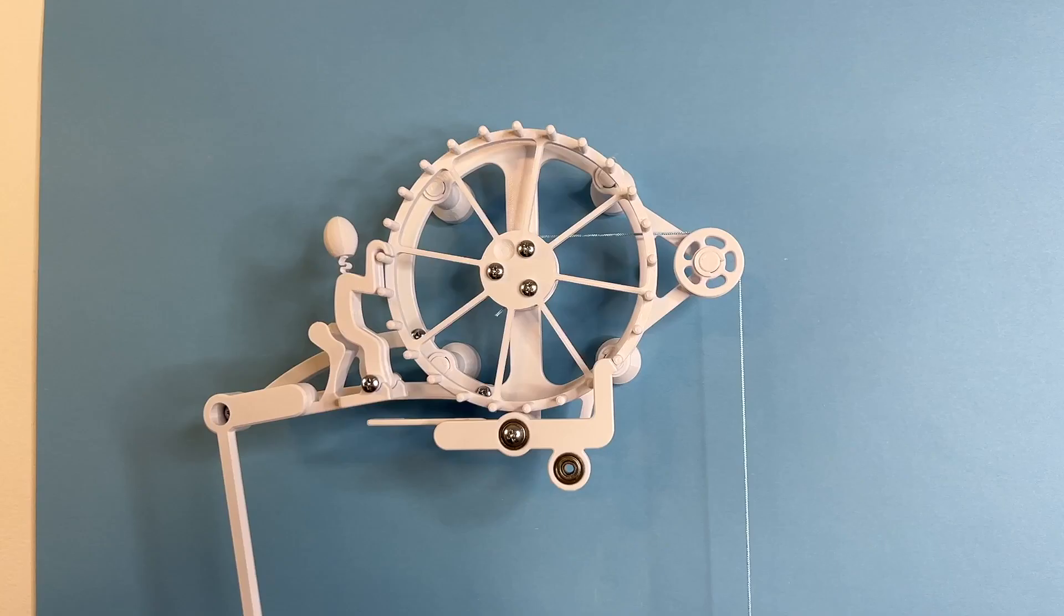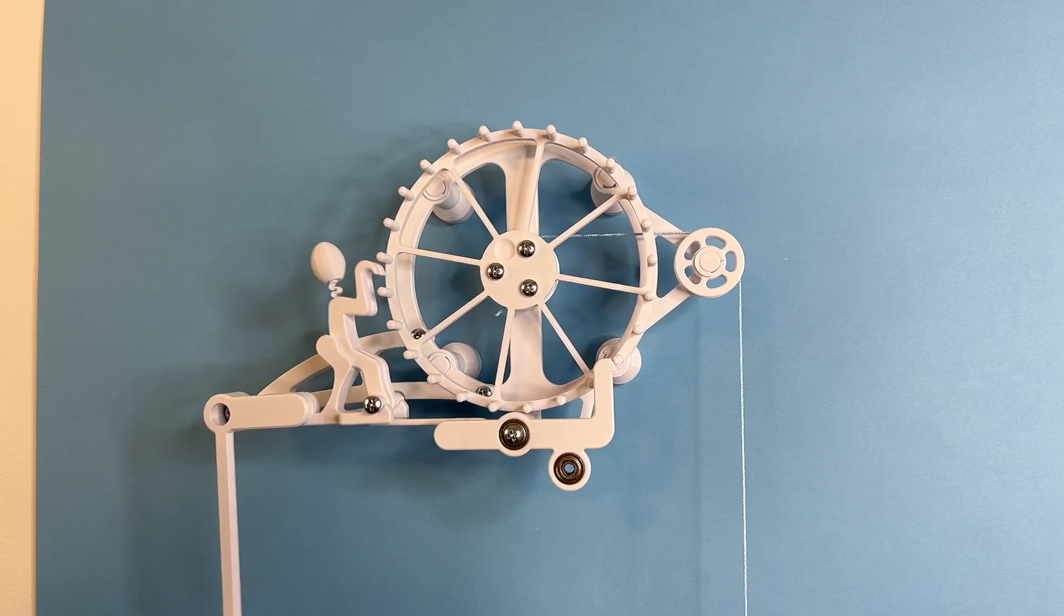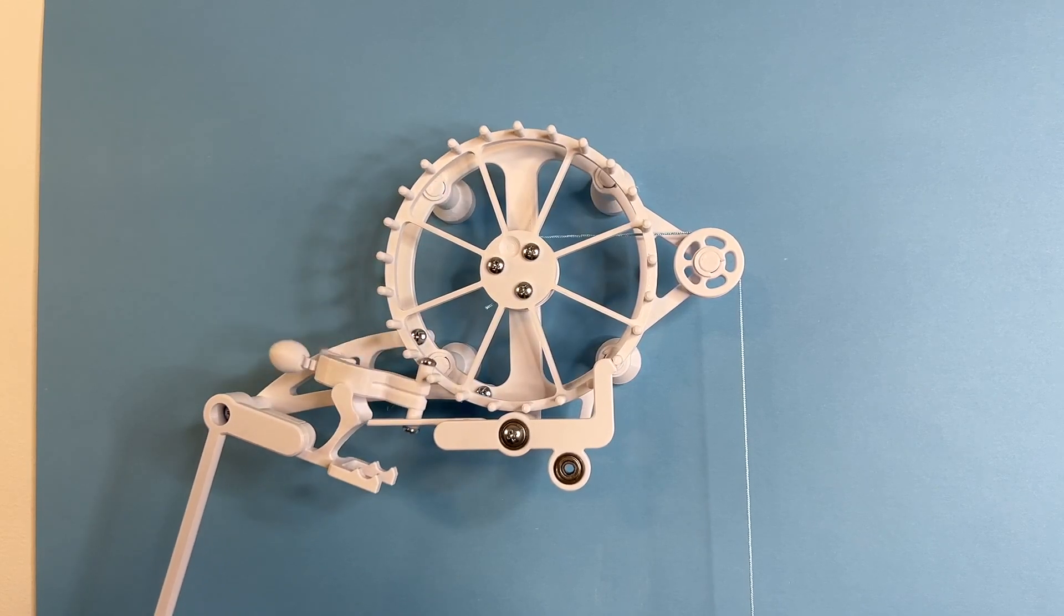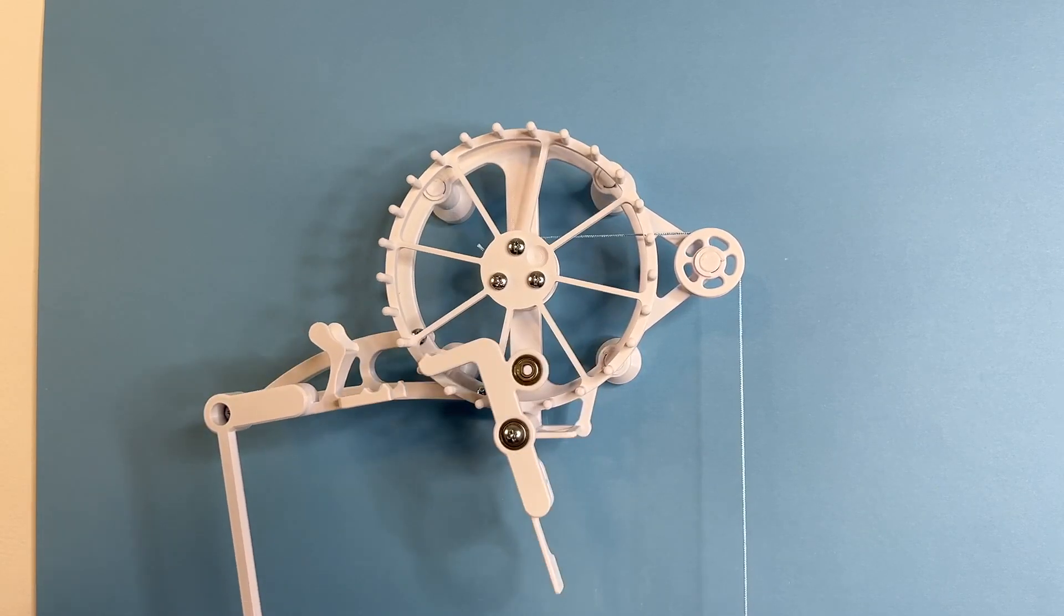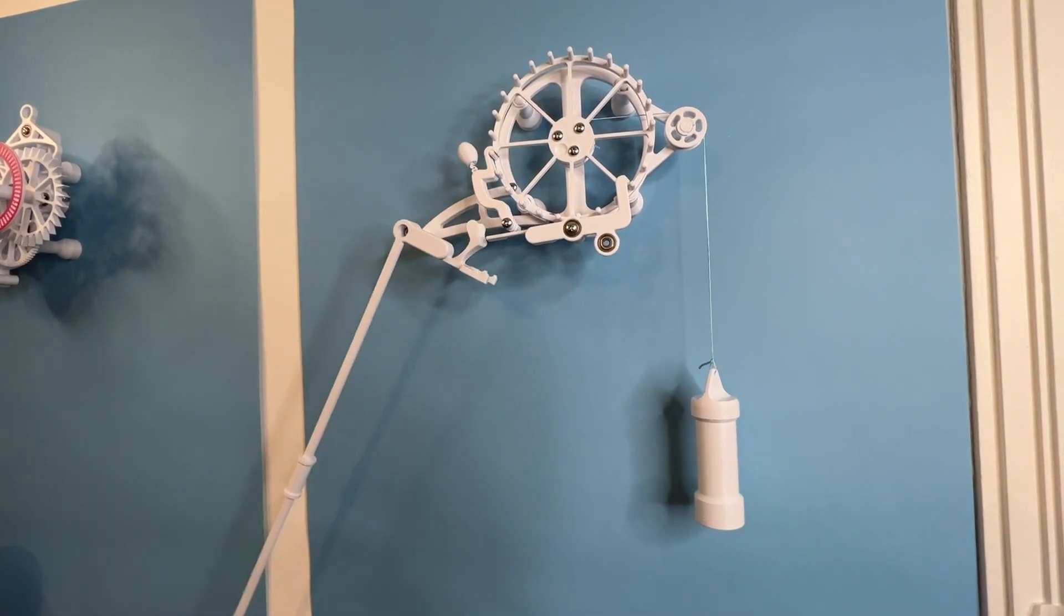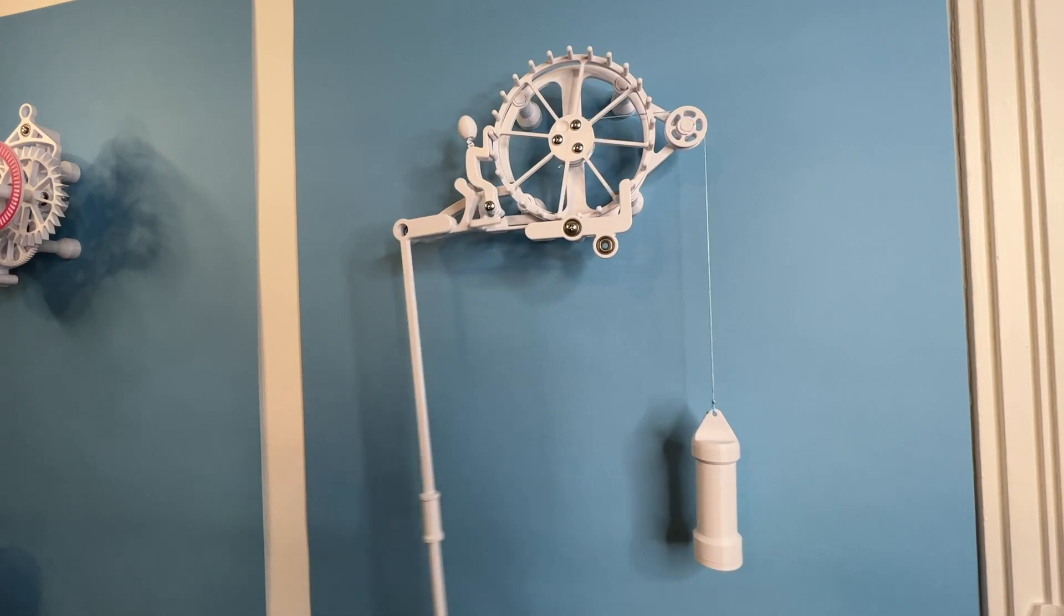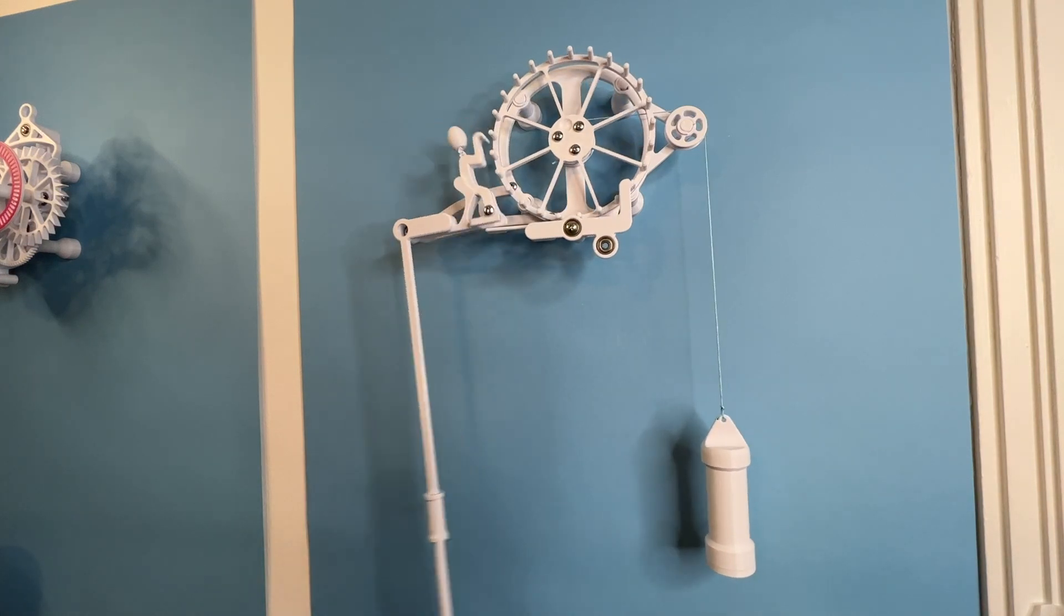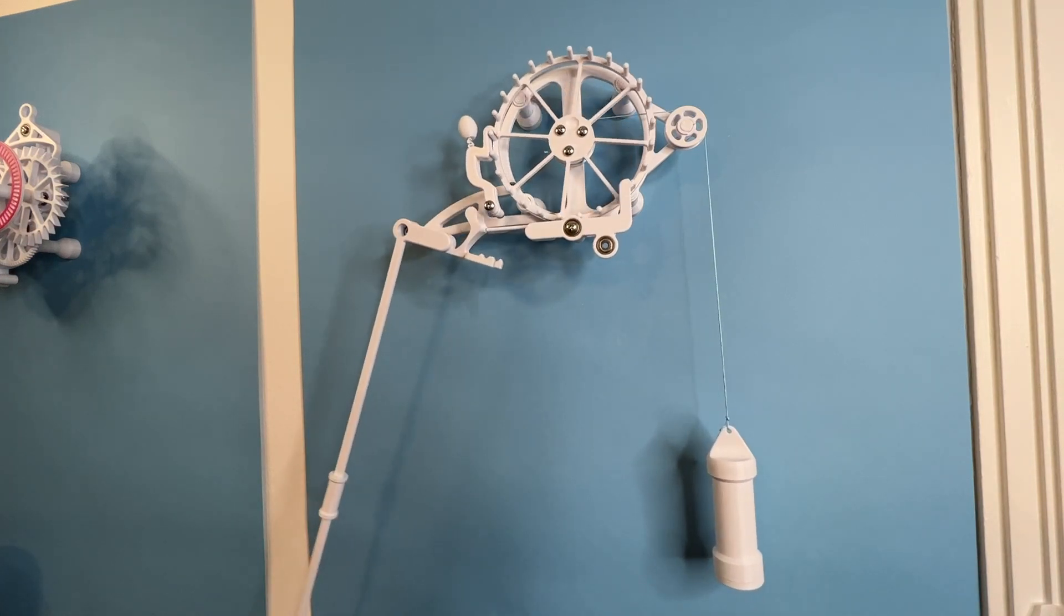If there's too much weight in the weight, you'll notice Bob might pop off at this point in the motion. To fix that, just remove some of the weight. If there's not enough weight, you'll notice that the escapement wheel does not pull Bob back up, but with the right amount of weight, you'll get this motion every time Bob comes down, the escapement wheel pulls him back up. Enjoy.